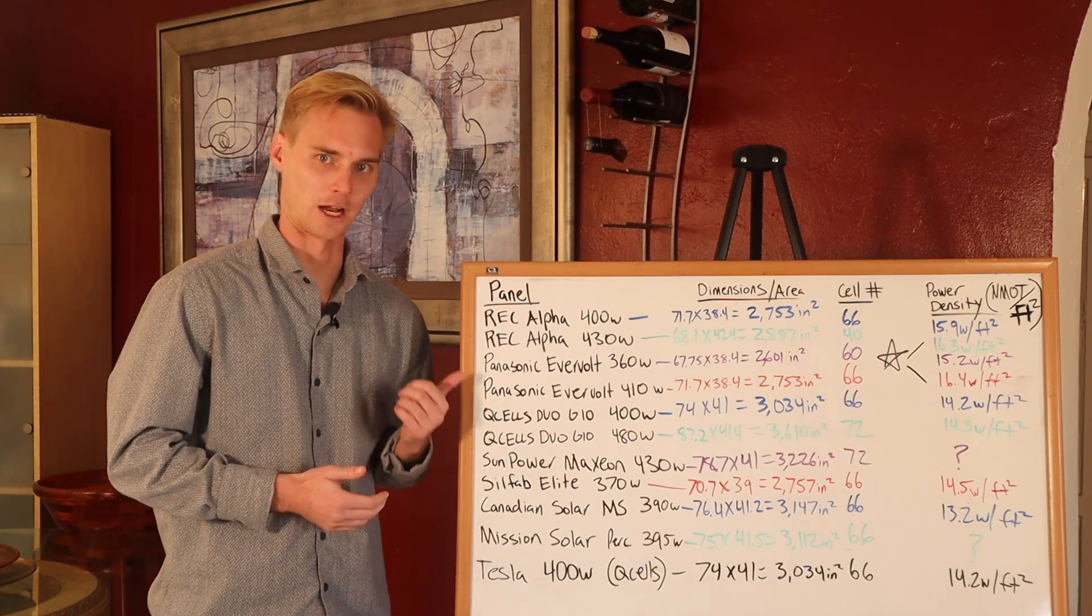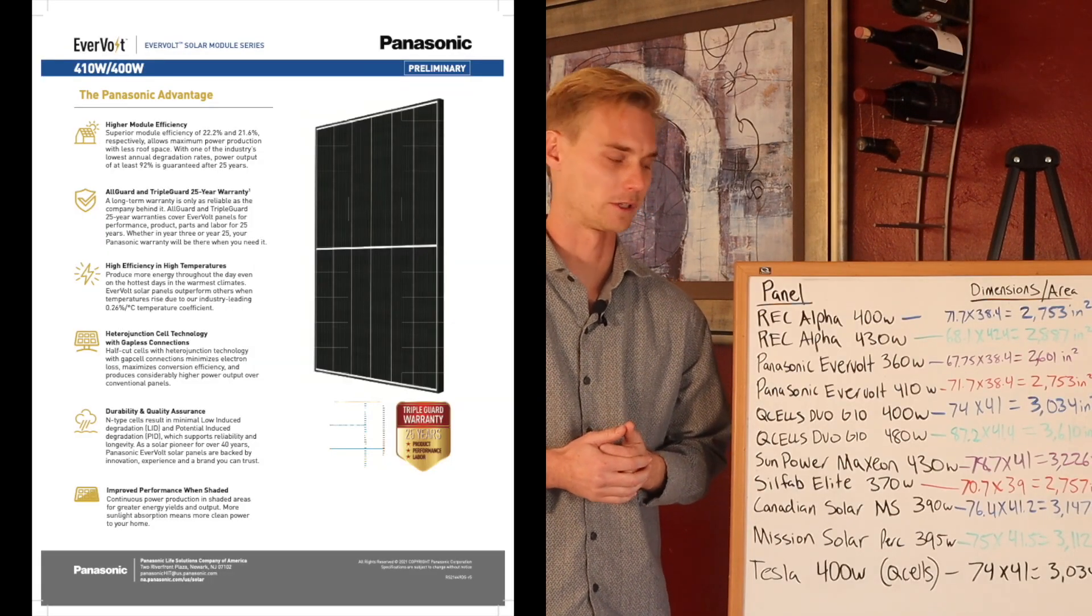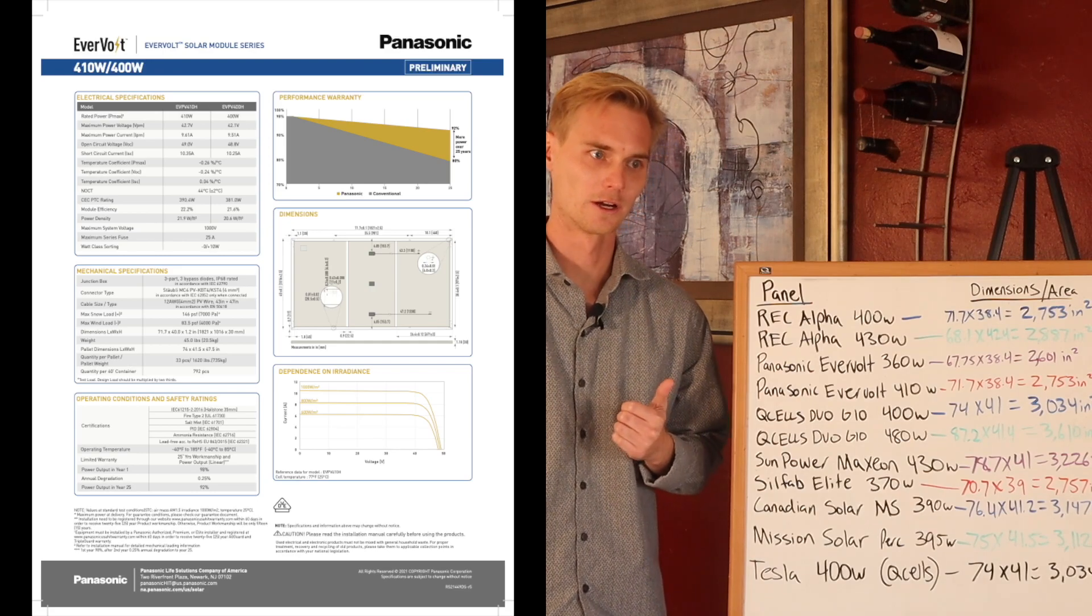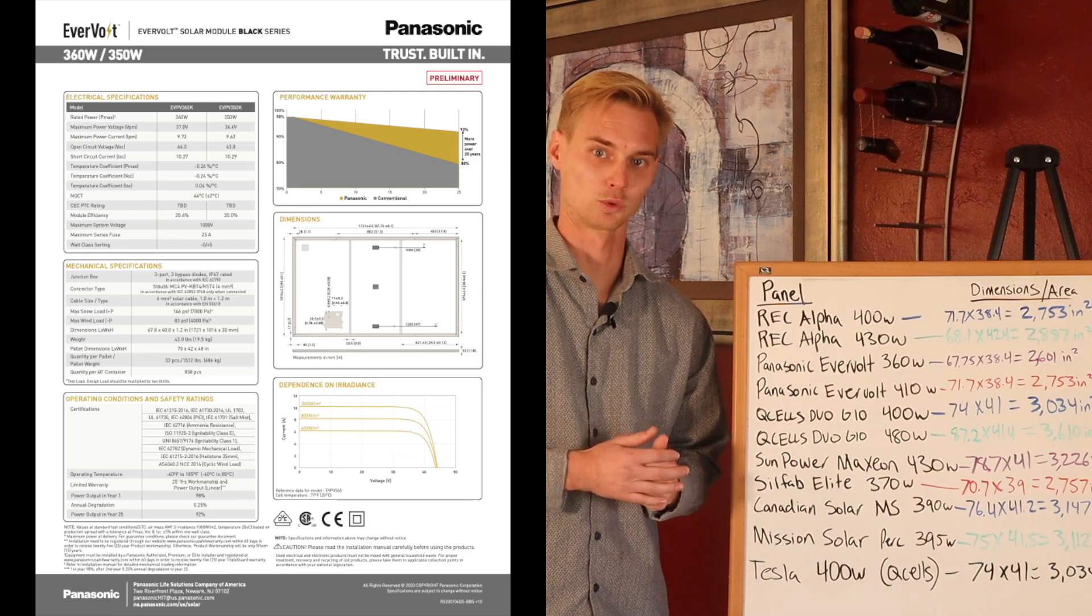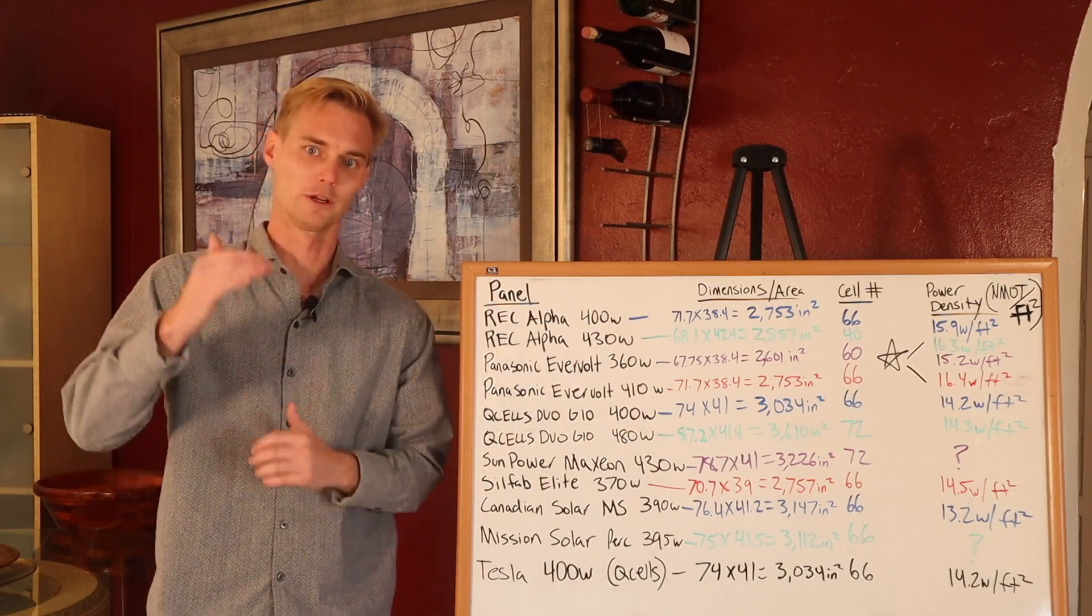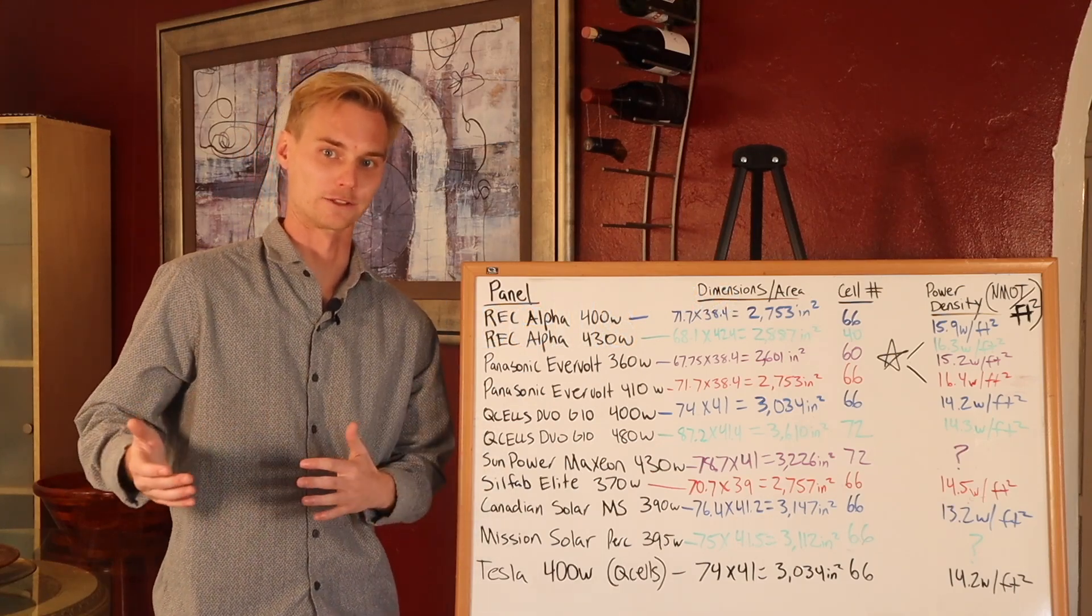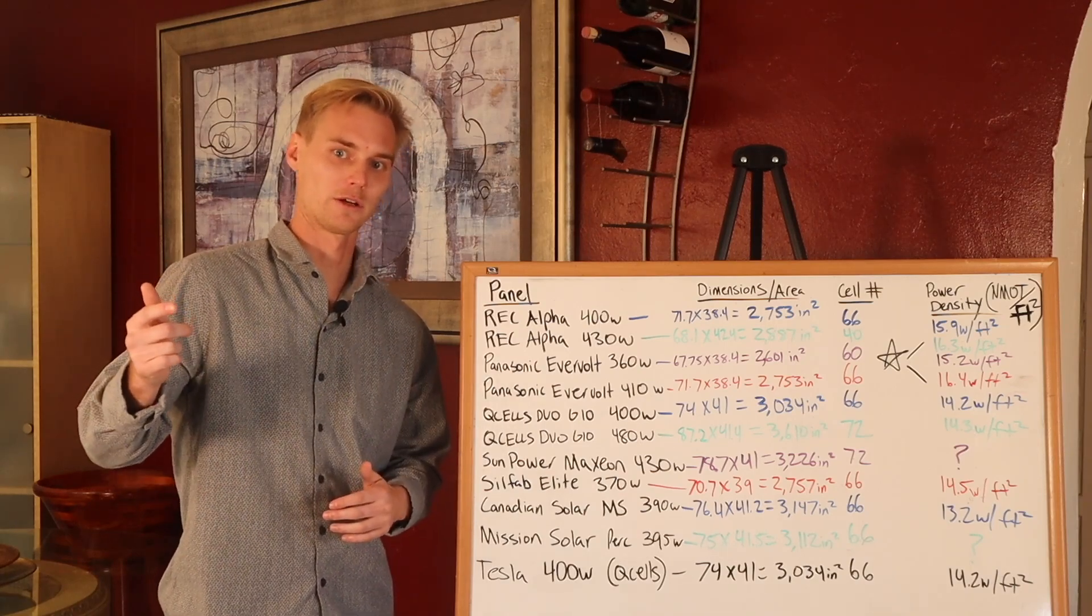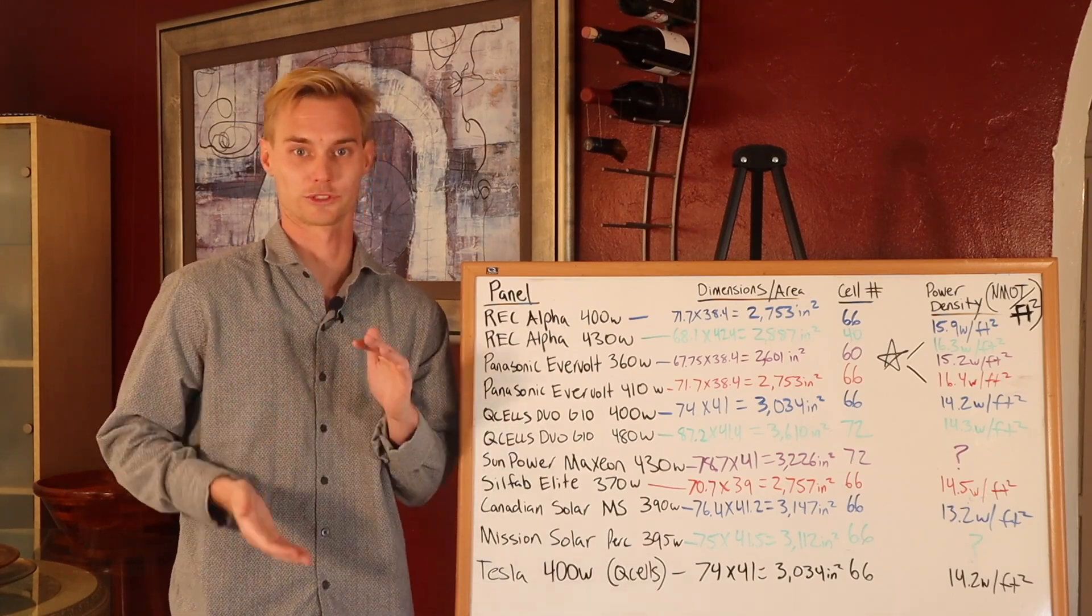The Panasonic Evervolt is actually a rebranded REC Alpha Series. I put the 410 and also the 360 in here. The 360 is a lot smaller. It's a 60 cell module versus the 410 being a 66. If you look at the dimensions, same width, but 66 inches obviously requires more height. If you take the 360 watt rating and you add 10%, that's 36 watts, so that'd be 396 that you would get up to if you were to make it the same size. That gives you a true actual size to size comparison.